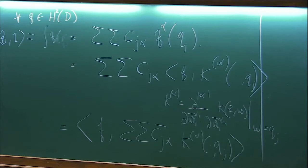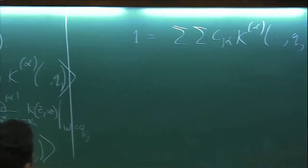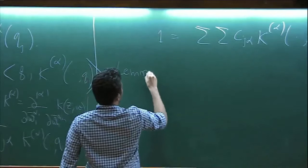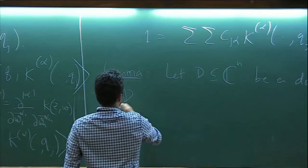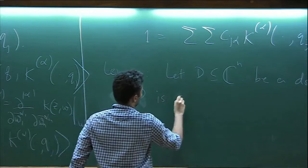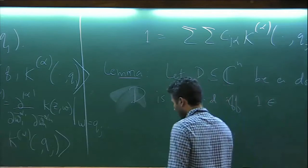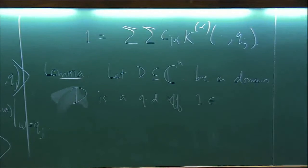So what we have effectively obtained is that we can write one as... So in other words it's an if and only if statement that we have proved. What can be written on as a lemma, so let d be a domain, d is a quadrature domain if and only if one belongs to... okay, one belongs to span, so let me come to that.